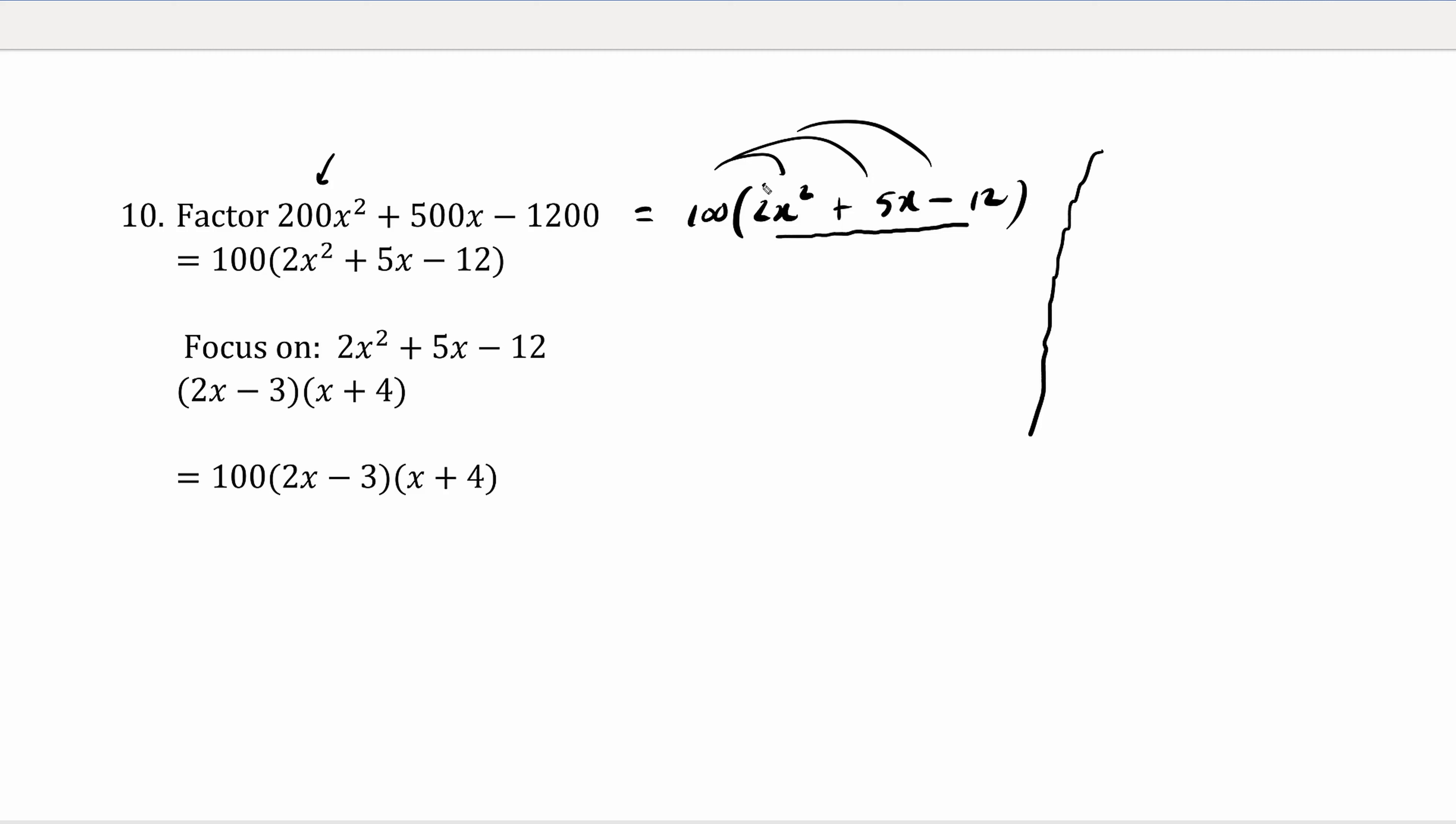Using the relaxing rainbow method, we have 2 times negative 12. We copy down the question, and we get negative 24.